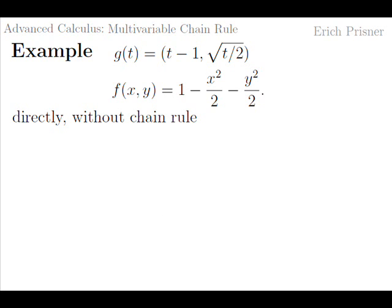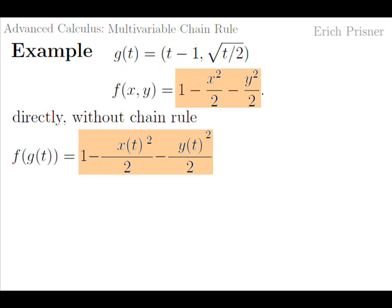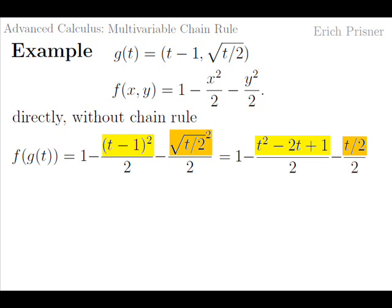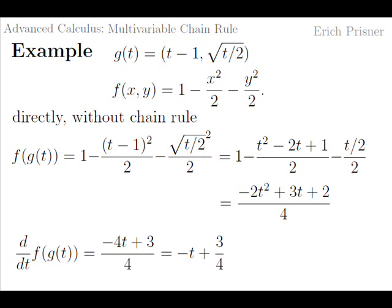All of this could have been derived directly without the chain rule formula, simply by substituting x(t) and y(t) into the definition of f. We get f(g(t)) = 1 − (t−1)²/2 − (√(t/2))²/2. Expanding by foiling: 1 − (t² − 2t + 1)/2 − (t/2)/2, which gives (−t² + 3t/2 + ... )/... and simplifies to a polynomial. Differentiating this directly, we get the derivative equals −t + 3/4, the same result as before.